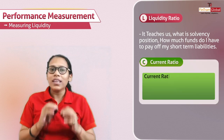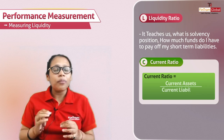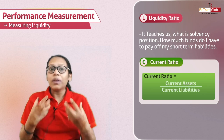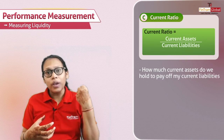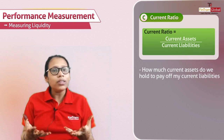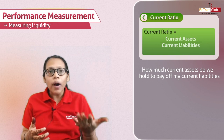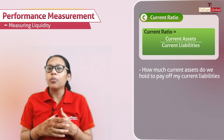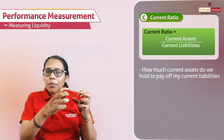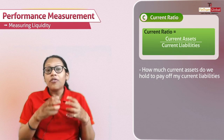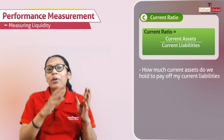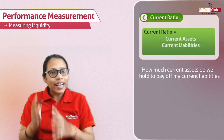The formula is very simple: current assets divided by current liabilities. This ratio basically means how much current assets do we hold to pay off our current liabilities. Normally, it is said that your current assets should be twice your current liabilities, so that even if some current assets shrink, you still have sufficient funds to pay off your current liabilities.